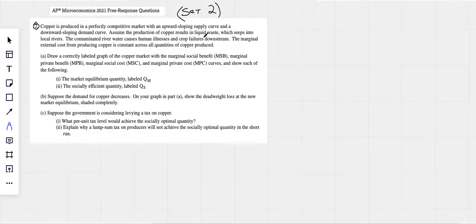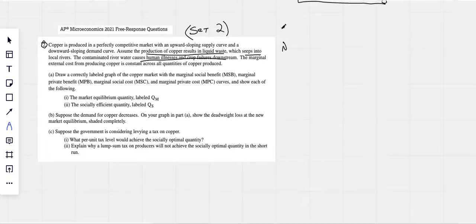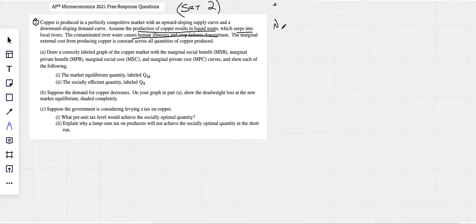The copper is produced in a perfectly competitive market with an upward sloping supply curve and downward sloping demand. The production of copper results in liquid waste which seeps into the local rivers, causing illness and crop failures. Because it's harmful, this is a negative externality, and it is a production externality.